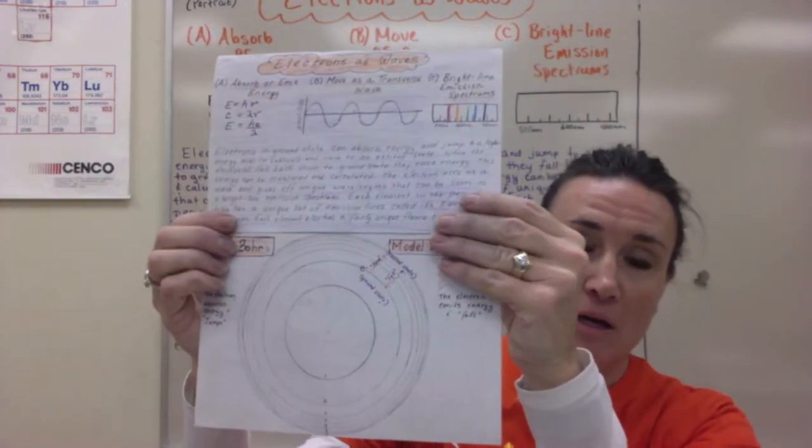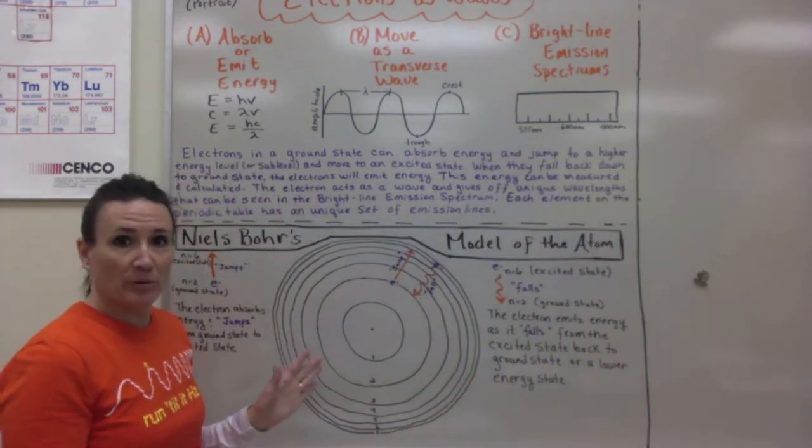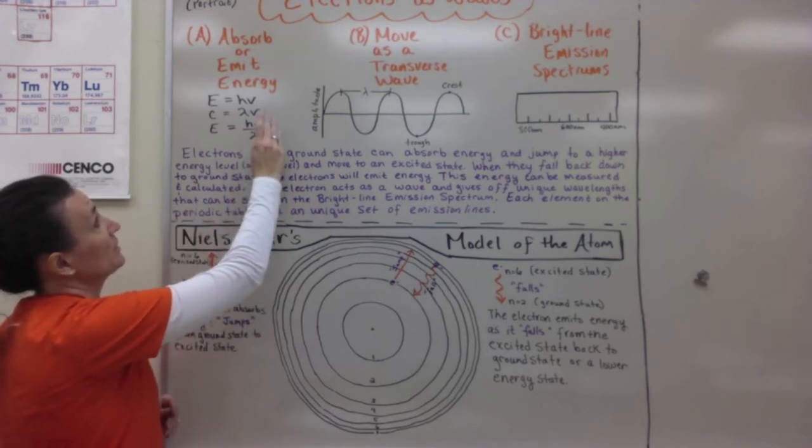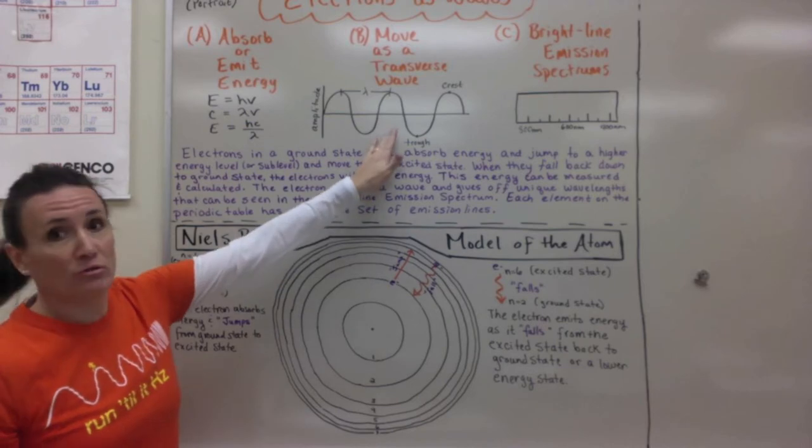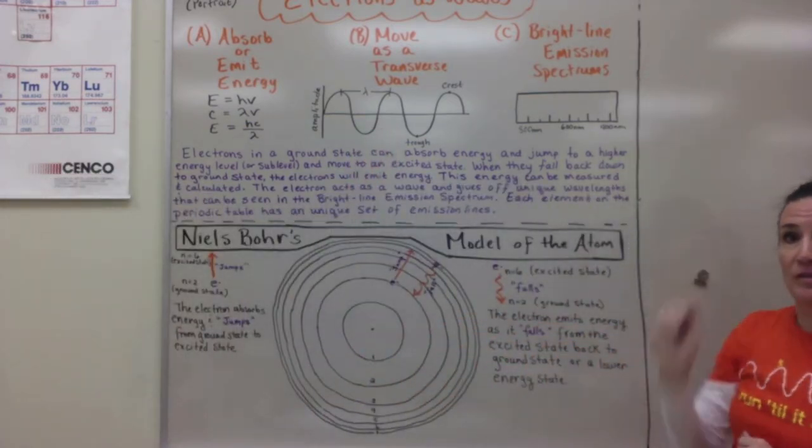and the notes are behind me. For this part of the foldable the major thing that you need to understand is that electrons can basically emit energy as a wave so we can calculate it, we can draw the transverse wave, we can also look at the emission spectrum and the flame test